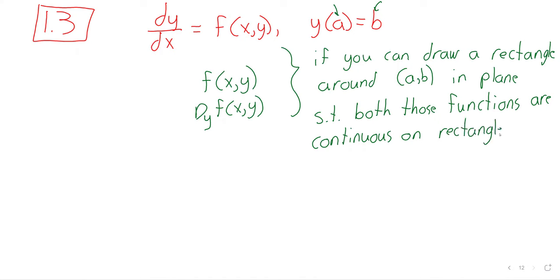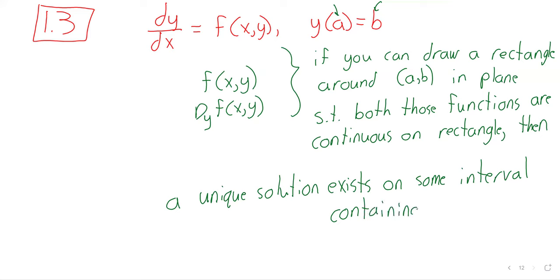Then a solution exists and the initial condition makes it unique. A unique solution exists on some interval of the x-axis containing a.